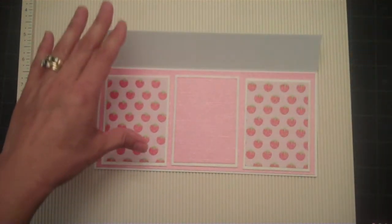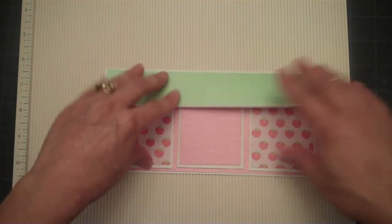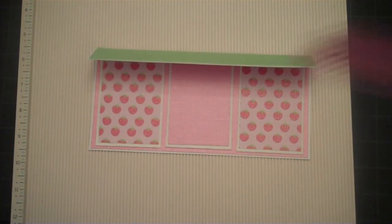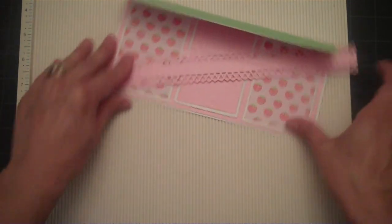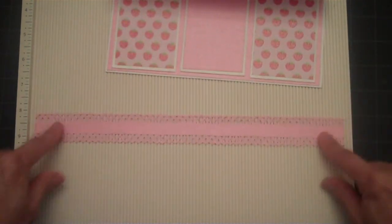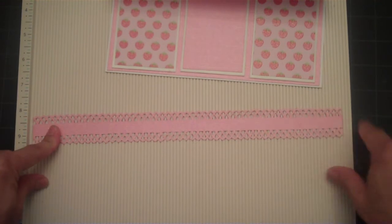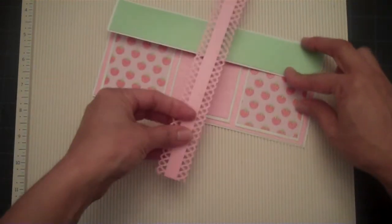There we have that. Now the next thing we're going to do is go ahead and make our belly band. And I got a piece of cardstock and it's 12 inches long. And I want to make sure I have enough to wrap around the card.